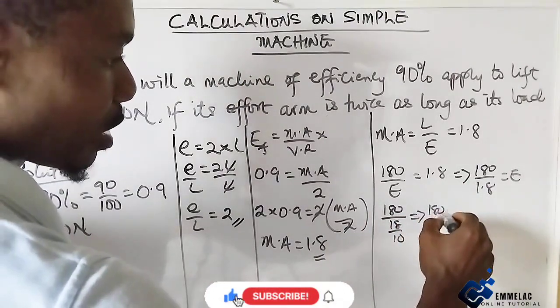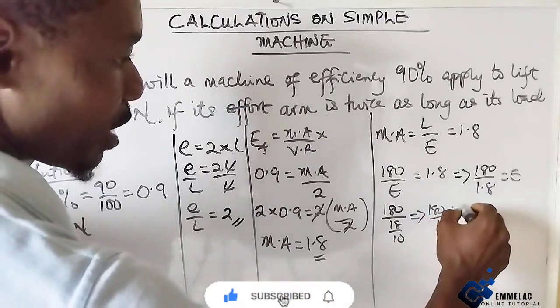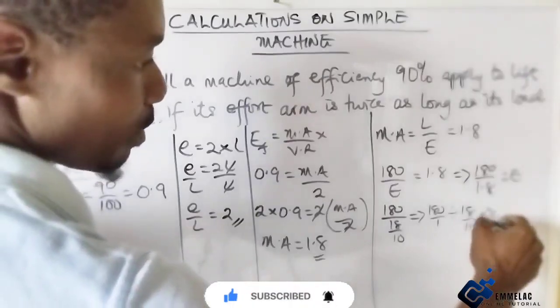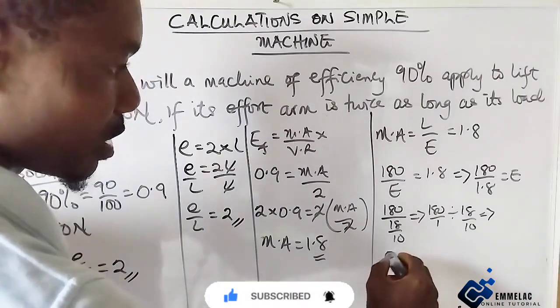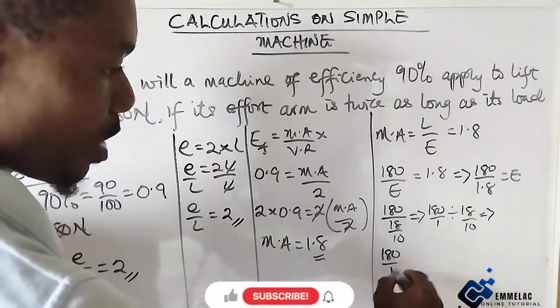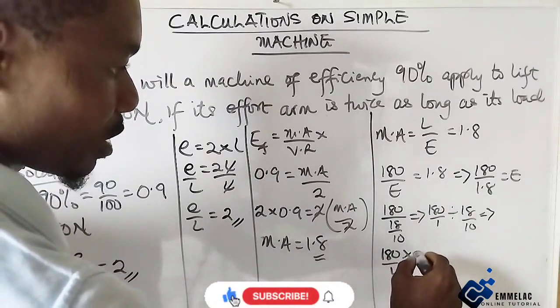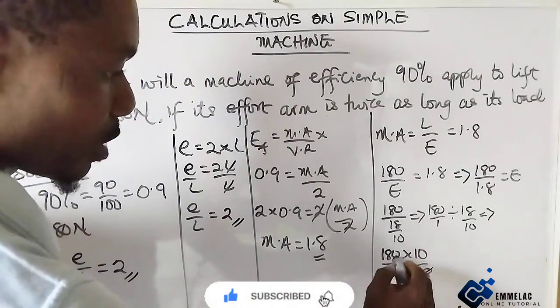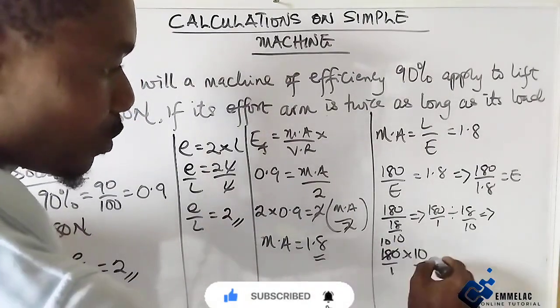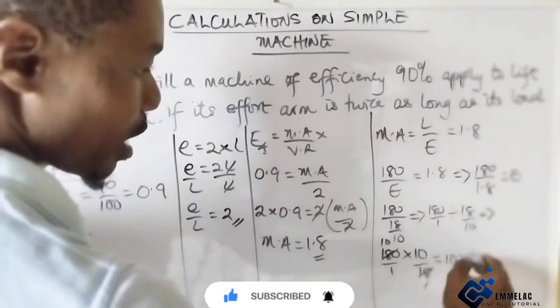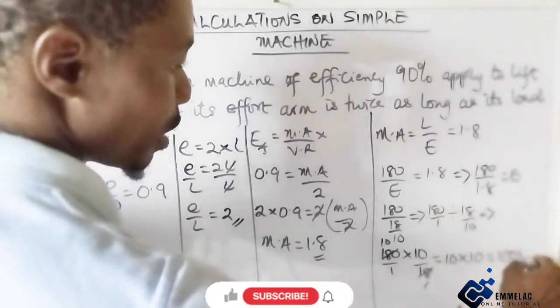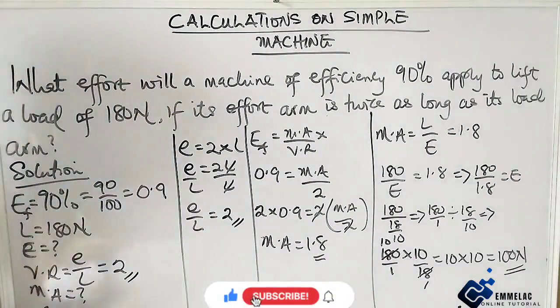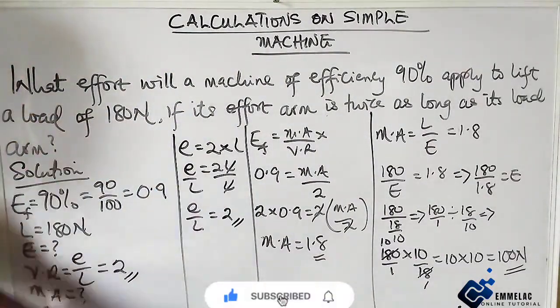Which also implies that these are 180 over 1 times 10 over 18. So 18 here, 1; 18 here, 10. So we have left what? 10 times 10, which will give us 100 newtons. So the effort here now is 100 newtons.